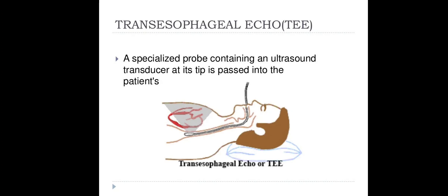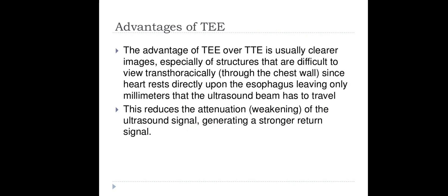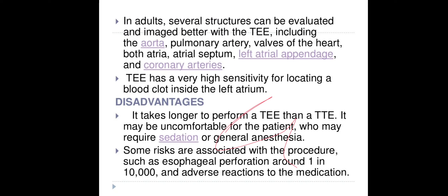TEE uses a specialized probe containing an ultrasound transducer at its tip, which is inserted into the patient. The advantage is that the transducer gets very close to the heart, giving clear images of structures like the aorta, pulmonary artery, valve structures, atrial septum, left atrial appendage, and coronary arteries. It is particularly sensitive for locating blood clots inside the left atrium.